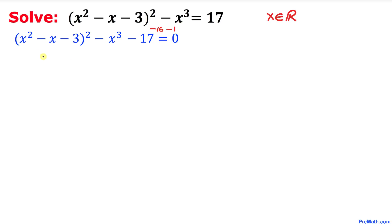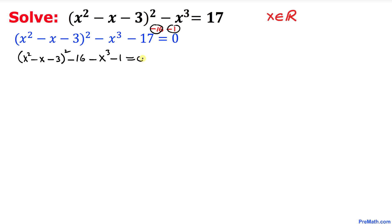So our equation is going to become x squared minus x minus 3 squared, and now I'm going to move this negative 16 right up here, and then write down negative x cubed and then negative 1, equal to 0.